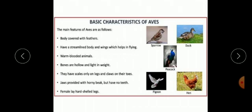The bones are hollow and light in weight. This helps them to keep their body light. They have scales only on legs and claws on the toes. The jaws are modified into beaks. They lay eggs with hard shells.